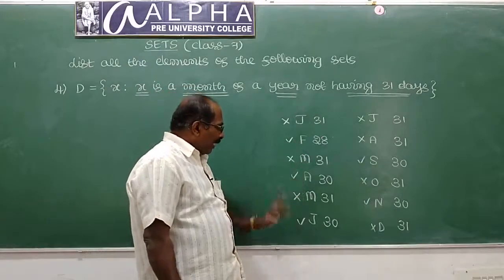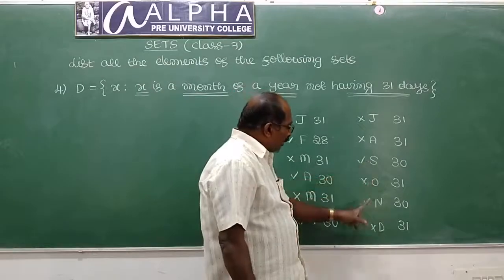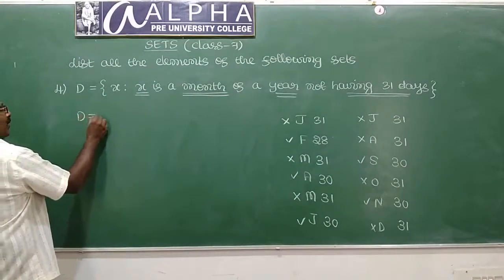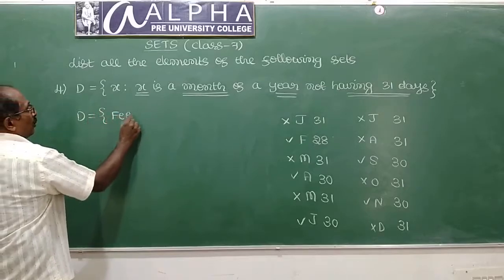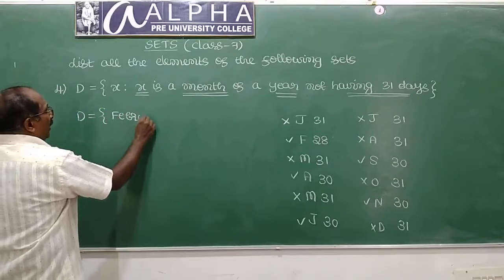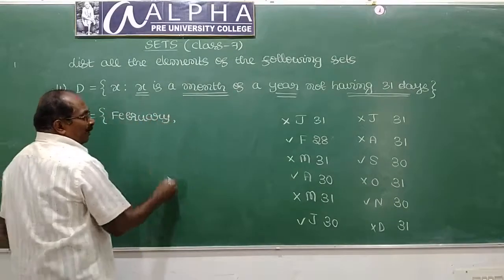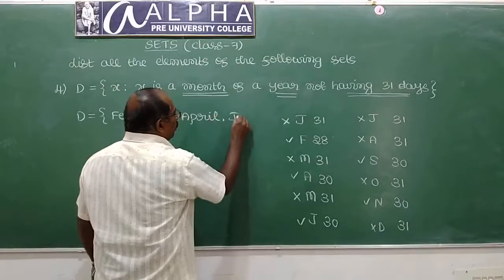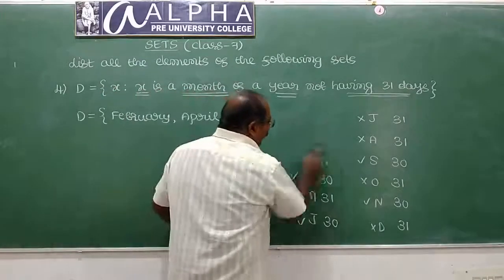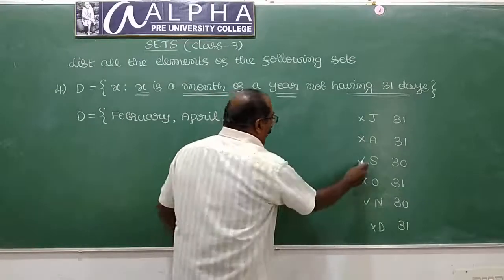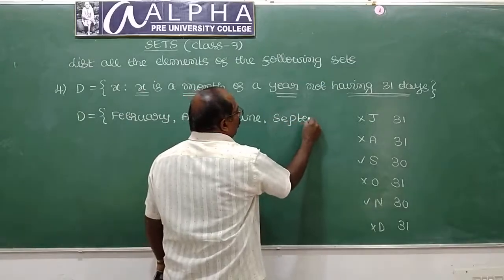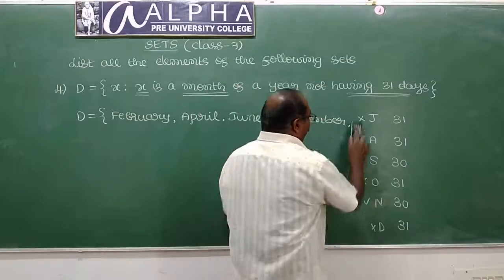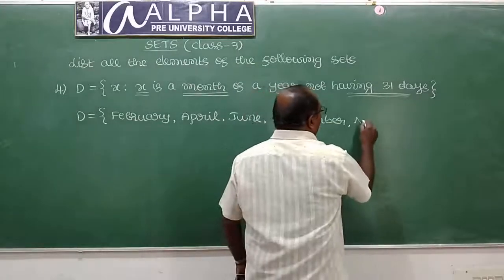So the months of a year not having 31 days are: February, April, June, September, and November. Therefore, set D in roster form is {February, April, June, September, November}.